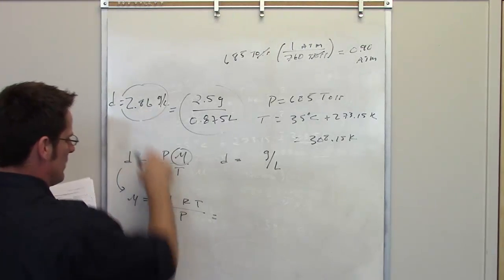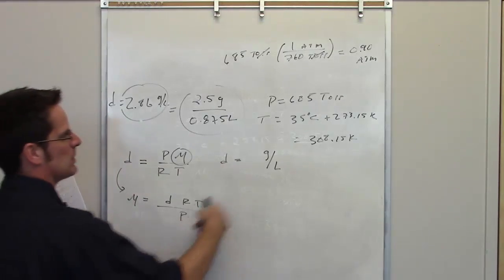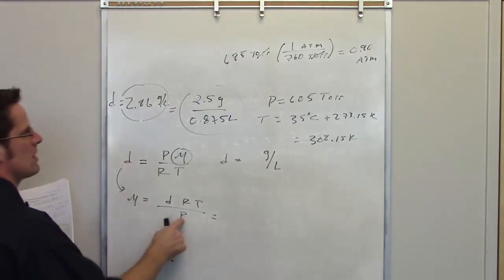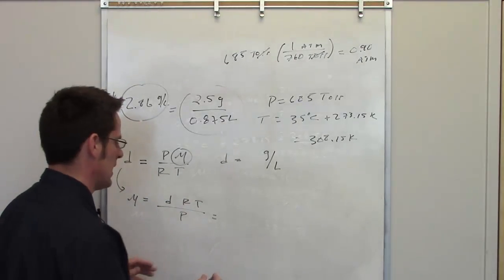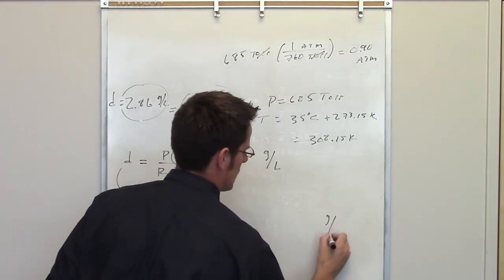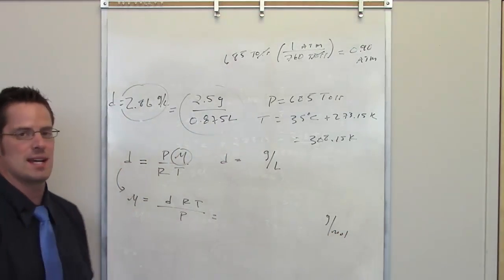So I have my density value right here. I know what R is, the ideal gas constant. I have my temperature over here in Kelvins, and I've got my pressure converted to atmospheres. If I throw all of those things in there, it should give me a final answer in units of grams per mole, which are the units of molecular mass. And that's what it's asking me to find out.